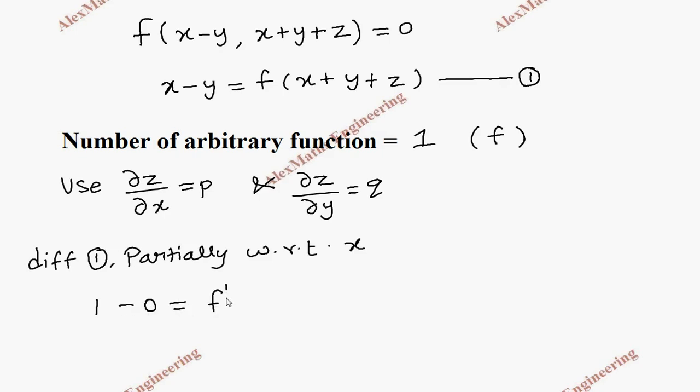f derivative is f' and all the inner terms should be written as is. As per the chain rule, all these terms we have to differentiate and that gives x differentiation is 1, y is 0 because it's treated as a constant, and this is ∂z/∂x.